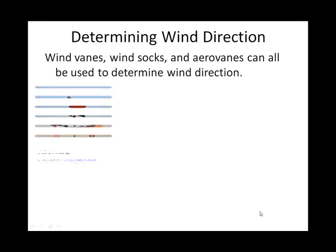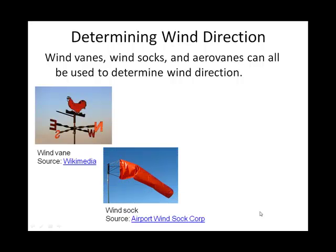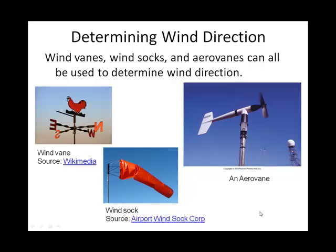So here are some gizmos for directly seeing which direction the wind is blowing. We can use a weather vane, a wind sock, or an aerovane. These are all ways of identifying wind direction.